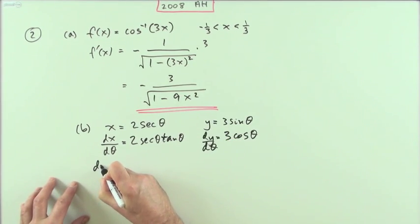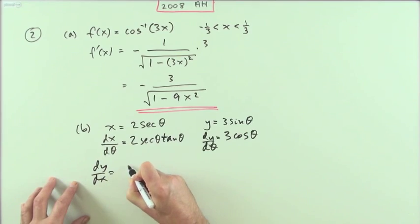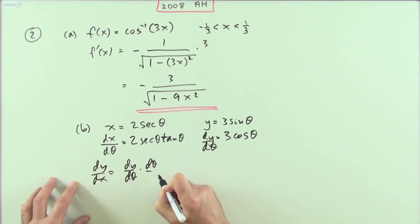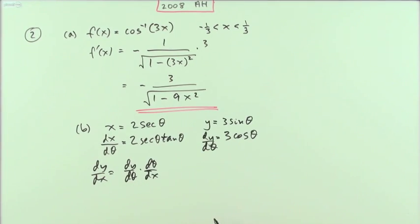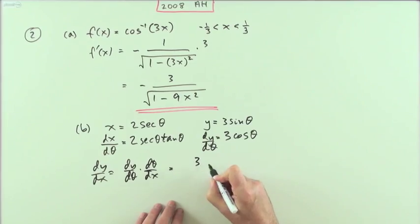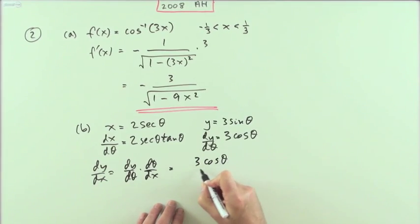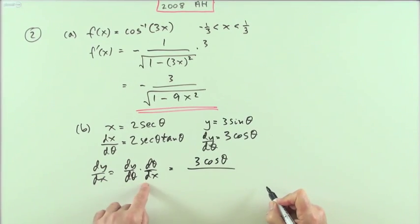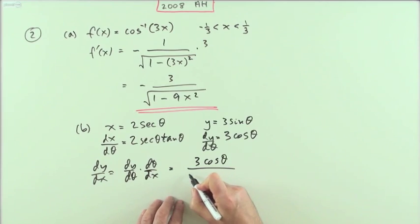And if I want dy by dx, I'll just have to do dy by d theta multiply that by d theta by dx. So that would be then divide by d theta. That's three cos theta times one over, which is a reciprocal of it, or I could just put it underneath.